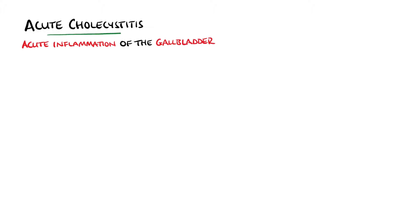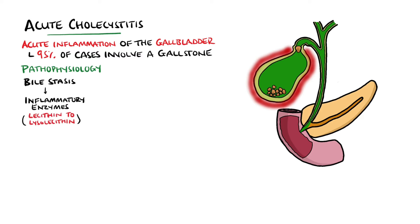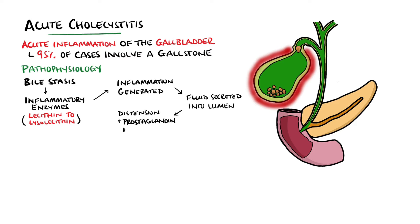Next we have acute cholecystitis, where there is acute inflammation of the gallbladder. In 95% of cases, this involves the presence of a gallstone blocking bile movement through the cystic duct. As a result of this bile stasis, there is a release of inflammatory enzymes such as phospholipase A, which converts lecithin into lysolecithin, which mediates inflammation. This causes secretion of fluid from the mucosa of the gallbladder into its lumen, causing further distension and release of inflammatory mediators such as prostaglandins. This generates a vicious cycle that can culminate in infection, as well as ischemia, necrosis, and perforation.